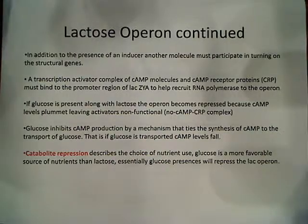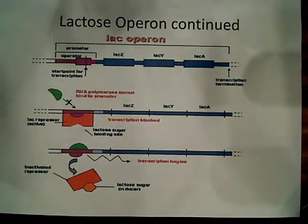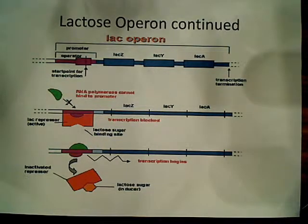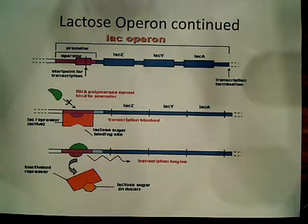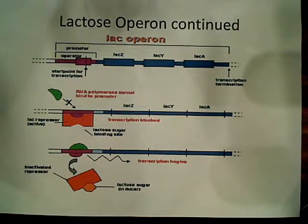That's basically all the detail I want to give about the lactose operon — that's how it works. This diagram explains the same things I just said with pictures. We have an operator region and a promoter region. The product of lacI is a repressor protein that binds to the operator region, and it prevents RNA polymerase from binding and transcribing these structural genes when lactose is absent, or when lactose and glucose are present together. Only if lactose is the only source of energy for E. coli will we see this lactose operon being used.